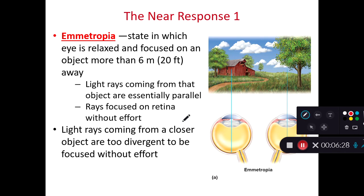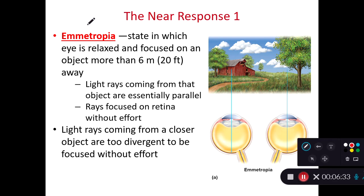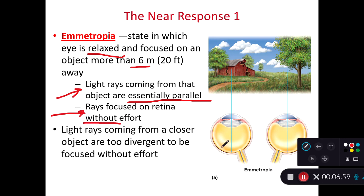The near response can be contrasted with emmetropia, which is when our eye is relaxed and focused on something more than six meters away. Light coming from an object more than six meters away will have essentially parallel paths of travel, and those rays can hit the retina without effort. Objects closer than six meters have divergent photons that are too divergent for us to focus on without effort — we need to bend and flex our lens using the suspensory ligaments and ciliary muscles to refocus on that near object.